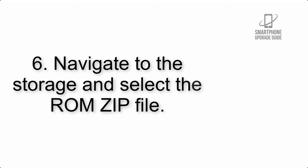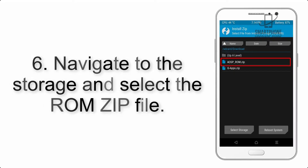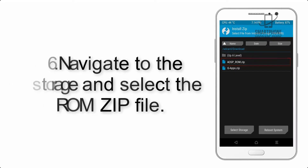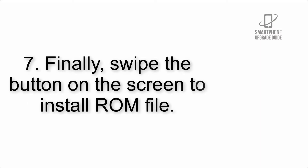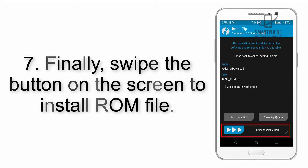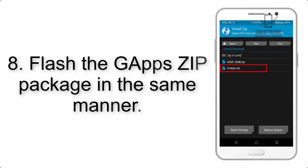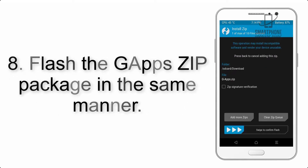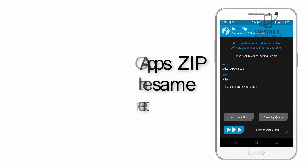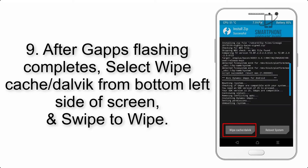Step 5: Go back to the recovery main screen and tap on the Install button. Step 6: Navigate to the storage and select the ROM zip file. Step 7: Finally, swipe the button on the screen to install the ROM file. Step 8: Flash the GApps zip package in the same manner.